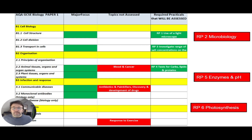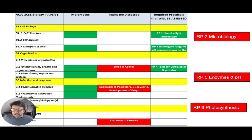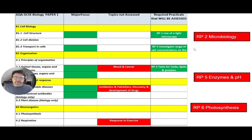They may come up, they may not, but I think it would be a good opportunity to learn these in particular. Things like blood — components of blood and cancer, antibiotics and painkillers, discovery and development of drugs such as penicillin — that didn't come up last year — and responses to exercise related to respiration. Also required practicals that weren't assessed: the microbiology practical, enzymes and pH, and photosynthesis. That's giving you a pointer to what might be in paper one.